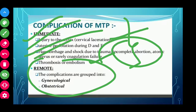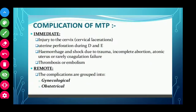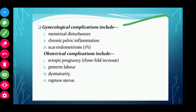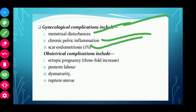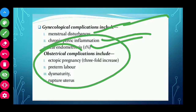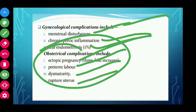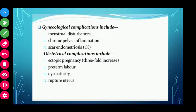Remote or late complications appear after a few days, weeks, or months. Gynecological complications include menstrual disturbances — about 80% of people will have menstrual disturbances — chronic pelvic inflammation, and scar endometriosis, with about a 1% chance. Obstetric complications include ectopic pregnancy, preterm labor, dysmaturity, and rupture of uterus. These are the complications of MTP.